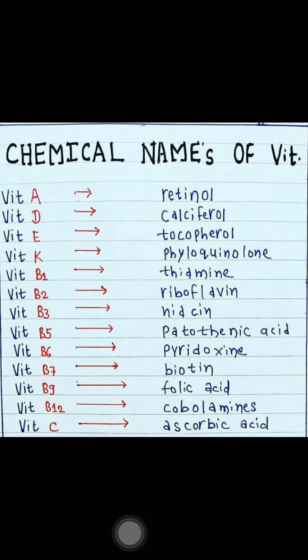The chemical name of Vitamin B9 is folic acid. The chemical name of Vitamin B12 is cobalamin. And the chemical name of Vitamin C is ascorbic acid. That's it from today's video — please subscribe and like, comment, and share my video. Thank you.